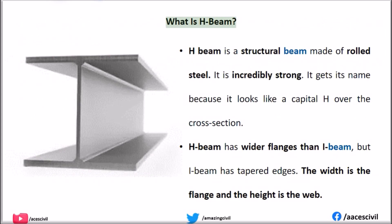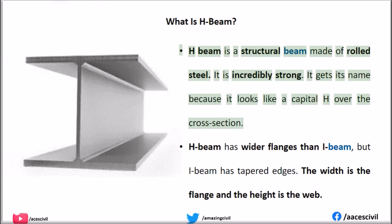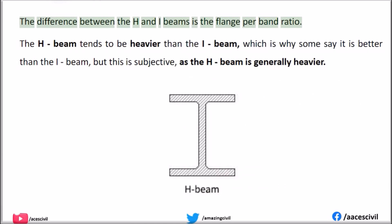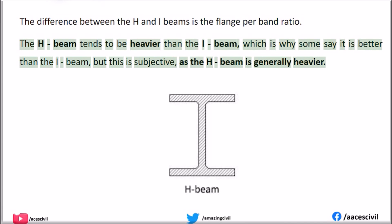What is H-beam? An H-beam is a structural beam made of rolled steel. It is incredibly strong. It gets its name because it looks like a capital H over the cross section. H-beam has wider flanges than I-beam, but I-beam has tapered edges. The width is the flange and the height is the web. The difference between the H and I-beams is the flange-to-web ratio. The H-beam tends to be heavier than the I-beam, which is why some say it is better than the I-beam, but this is subjective, as the H-beam is generally heavier.